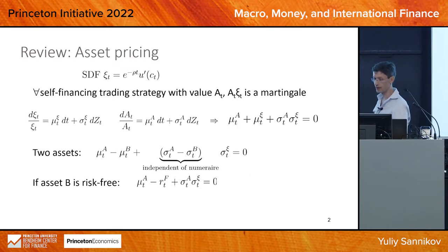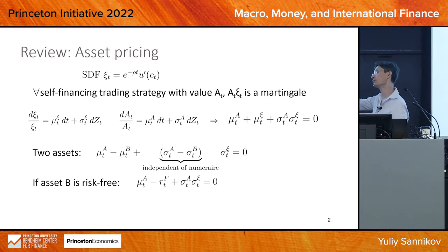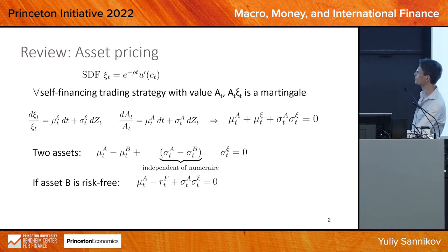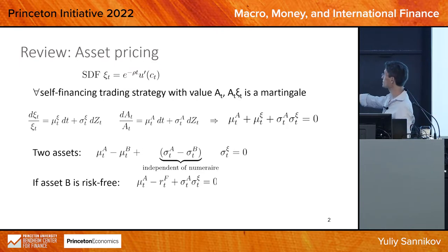The fact that it's a martingale is basically an optimality condition for an agent. If this is not a martingale and goes up in expectation, it means the agent would be getting higher marginal utility in the future, so they would need to consume less today and save more. That would violate optimality.